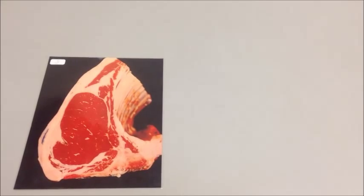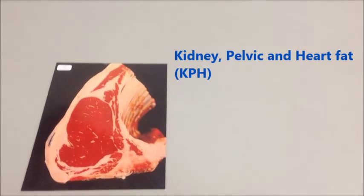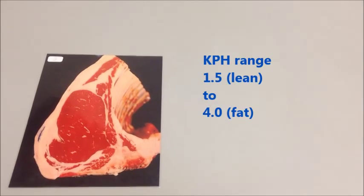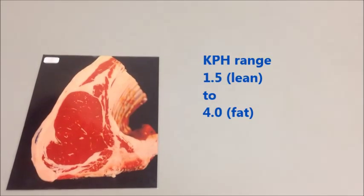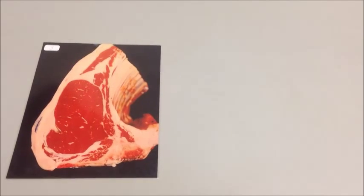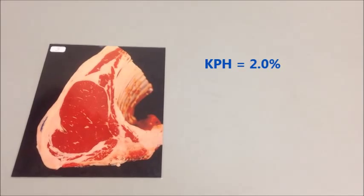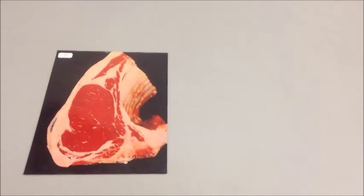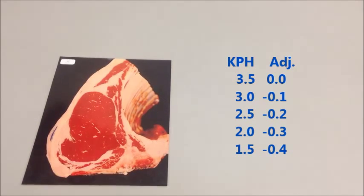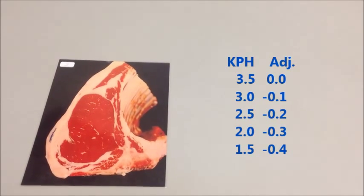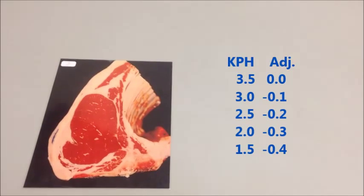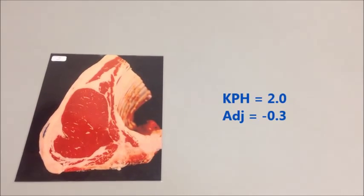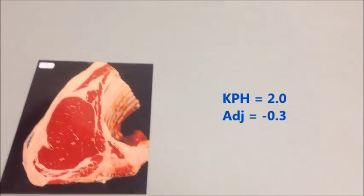The percentage of kidney, pelvic, and heart fat is calculated as the percentage of fat located in the kidney, pelvic, and heart areas of the carcass. It can range from about 1.5 up to 4.0 for a really fat carcass. For this carcass, we'll say the KPH percentage is 2.0. When we have our KPH percent, we apply it to the chart: 3.5 is no adjustment, 3.0 is minus 0.1, 2.5 is minus 0.2, and 2.0 is minus 0.3. So this carcass has a minus 0.3 adjustment for its KPH, which we subtract from the preliminary yield grade.